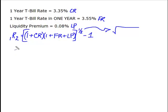Alright, so I'm going to go ahead and solve. So I'm going to say one plus my current rate of 0.0335, which is that little first part. And now I'm going to multiply that by one plus the future rate, which is 0.0355. And I'm going to add my liquidity premium. Now, don't fall into the math black hole.